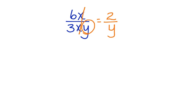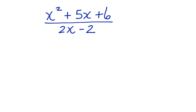Now let's look at simplifying rational expressions where we need to use factoring. x squared plus 5x plus 6 divided by 2x minus 2. Now to work with this rational expression, we have to factor the numerator and the denominator.